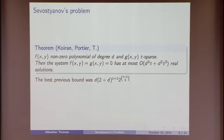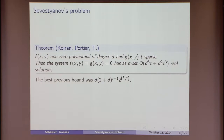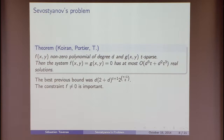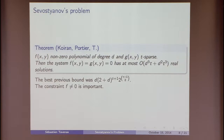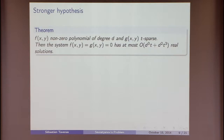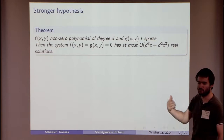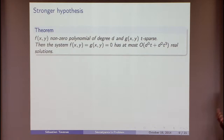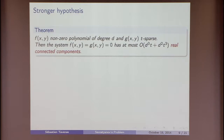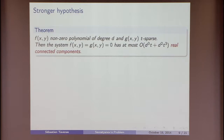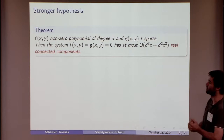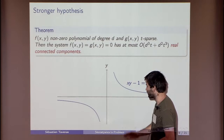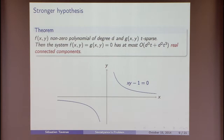We improved the previous result to get the case introduced by Sebastianoff: if we have a polynomial f of degree at most d, and g is t-sparse, we are able to get a polynomial bound for the number of real solutions. In fact, we have a stronger result — we are able to count the number of real connected components. For example, for a zero set we count two components, and we have a bound on this number.